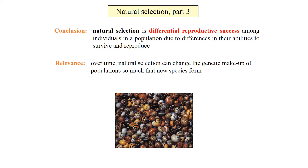Some organisms are able to simply have more offspring per litter. For example, other organisms live more years, more periods of time, and that allows them to have more offspring.